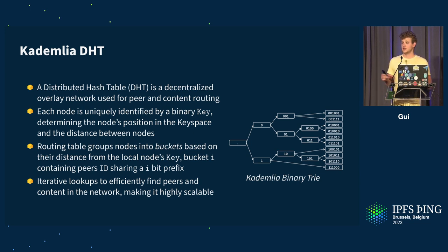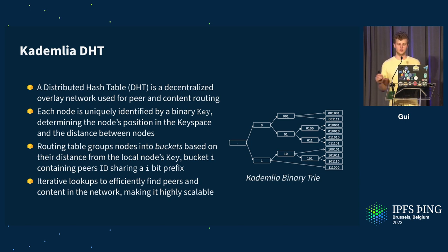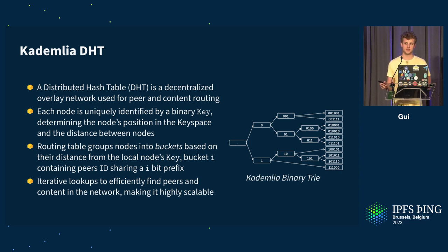In this DHT, everything — all the nodes, all the content — has a name in a unified namespace, which in our case is a 256-bit key string.